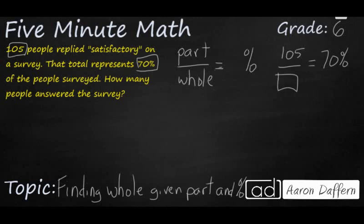We're looking for how many people answered the survey. So let's set up our proportion here. 105 over an unknown is the same as 70 over 100.